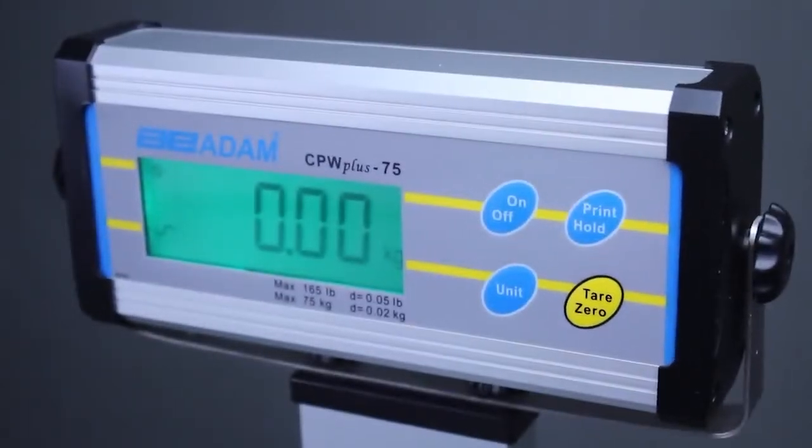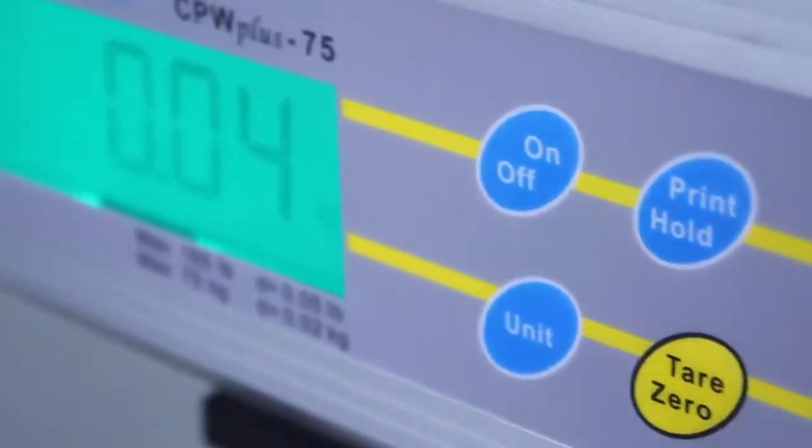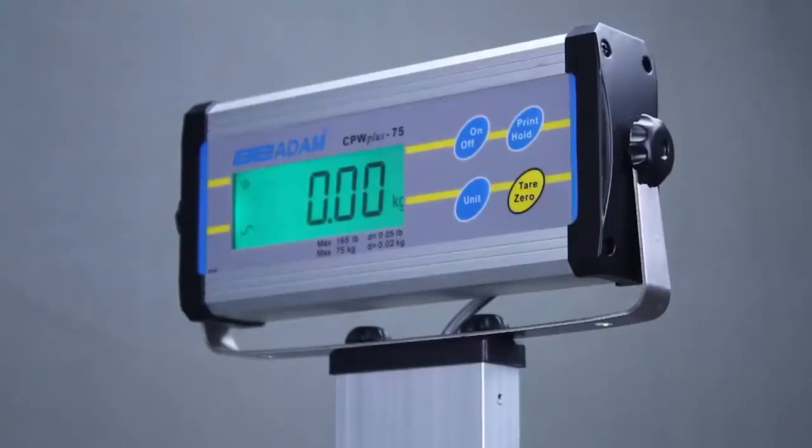At the heart of the scale is the indicator, housed in a sturdy aluminum casing and featuring a four-button keypad. The indicator contains a backlit digital display with large, easy-to-read digits.